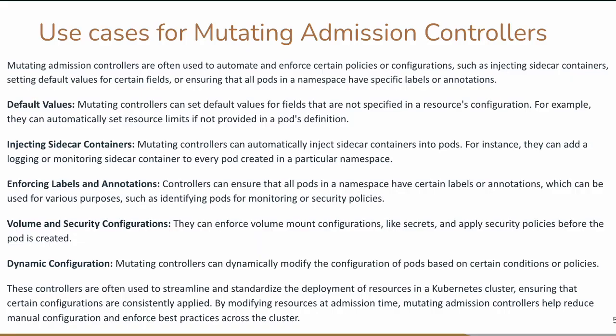Next are the use cases for a mutating admission controller. These are better understood through examples. Mutating admission controllers are often used for automating and enforcing policies and configurations. For example, if you are deploying your application in Kubernetes and you want to inject a sidecar — suppose you want to gather logs and put them inside your centralized ELK cluster — in those conditions we are going to inject the sidecar.